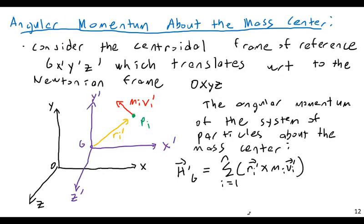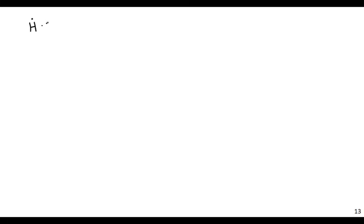I'll work through some math related to this on the next page. We have a local coordinate system passing through the center of mass, and I want to look at the angular momentum of the swarm of particles about its own center of mass. If I take the derivative of this with respect to time, I get H-dot — the rate of change of angular momentum about its own mass center — H prime G dot.